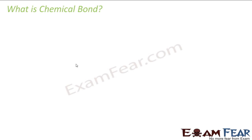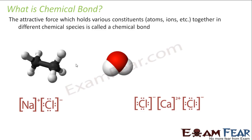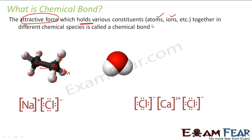Now the question is: what is a chemical bond? Chemical bond is nothing but the attractive force which holds various atoms, ions, etc., together in a chemical species. For example, in ethane I have two carbon and six hydrogen atoms — there must be some attractive force holding these atoms together. That force is called a chemical bond. Similarly in the water molecule, there is some force holding the oxygen and hydrogen atoms, and that force is the chemical bond.